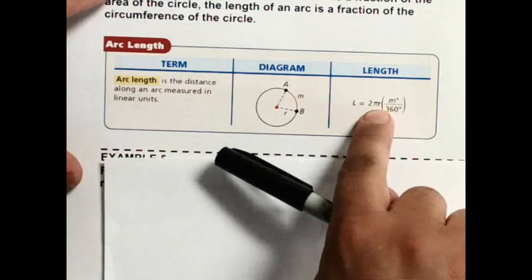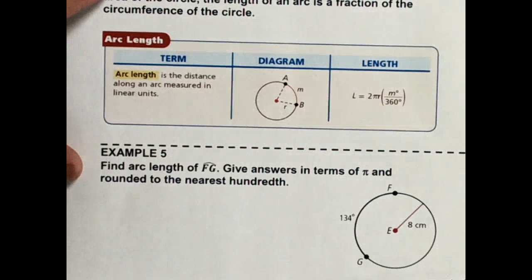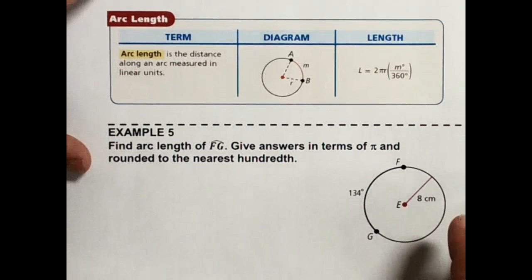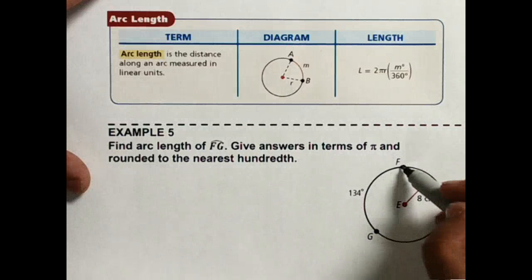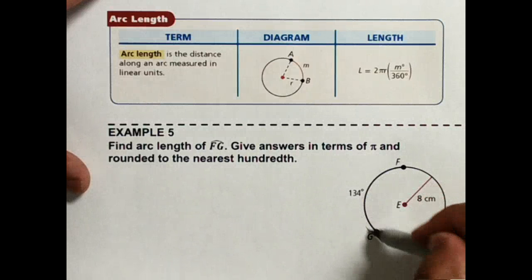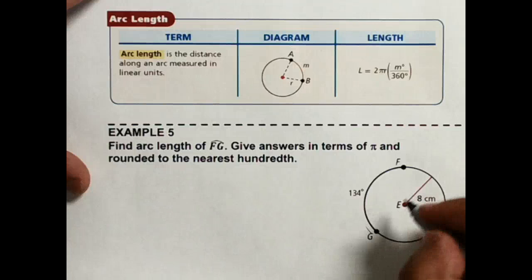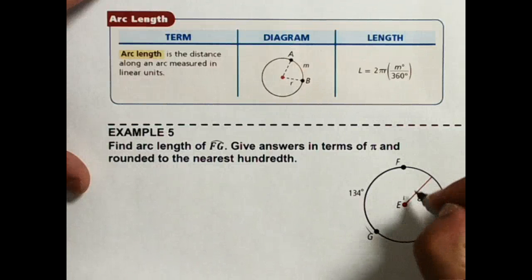So on number 5, we have this arc FG that's 134 degrees. Now, this radius is drawn over off to the side, but there's no reason why I can't go from E to F and say that that's 8 centimeters.